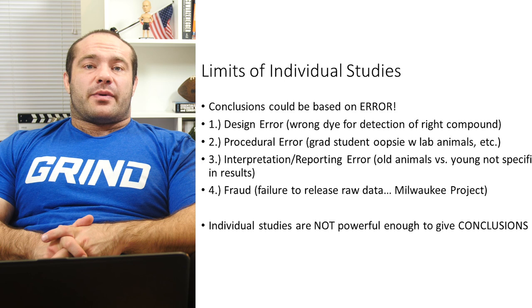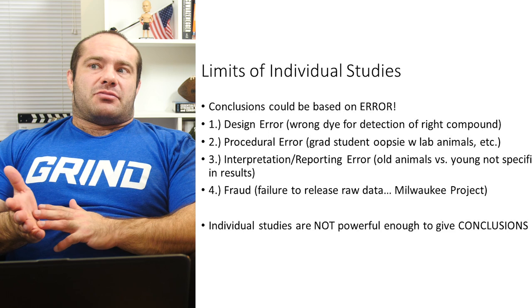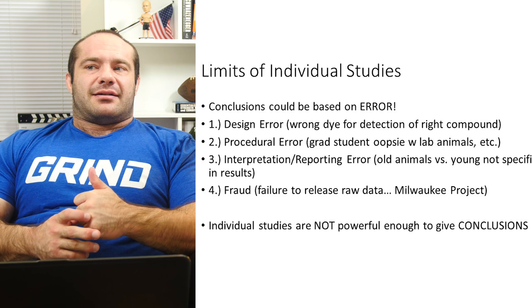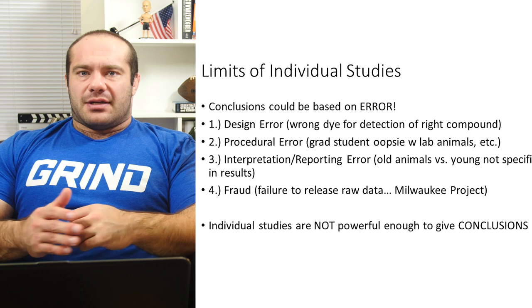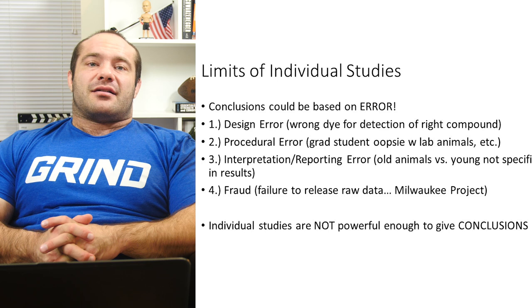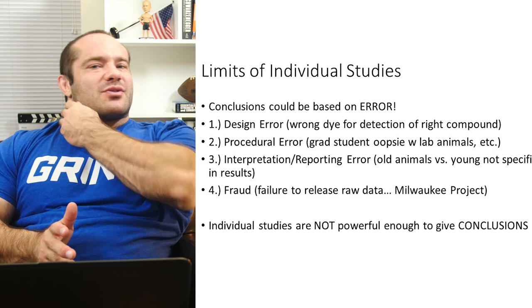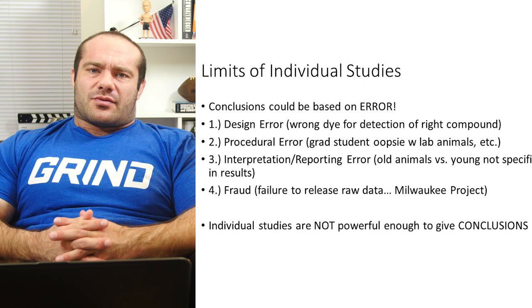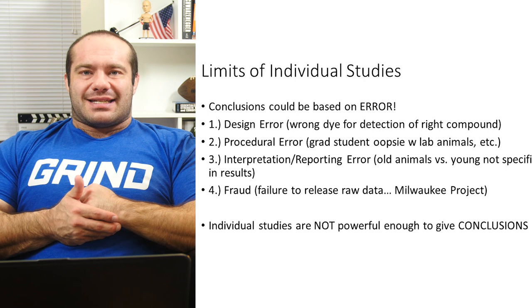If statistical error were the only concern, a 95% certainty would be pretty good for harmless things like changing up training. But consider: if you take two studies that both show the same thing at a p-value of 0.05, then 0.05 times 0.05 — it's a really low chance both are wrong. But that does not account for all the other sources of error.